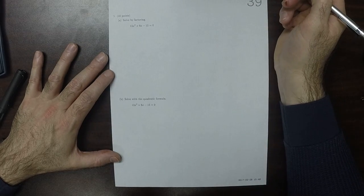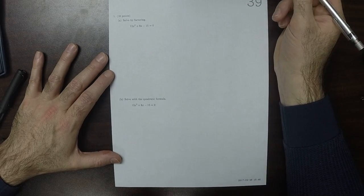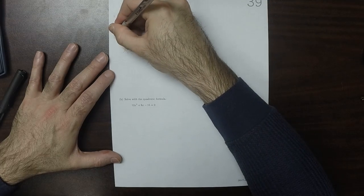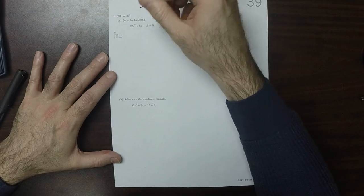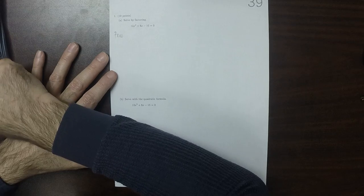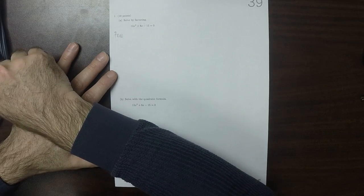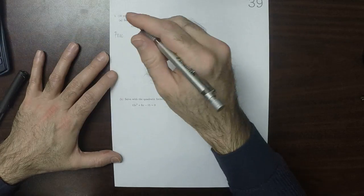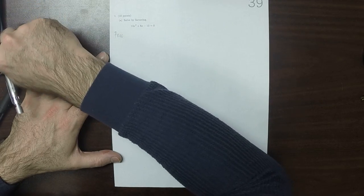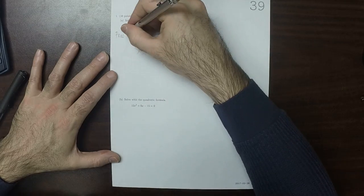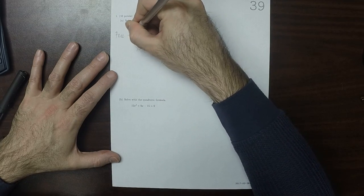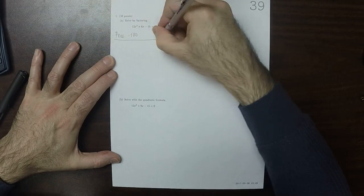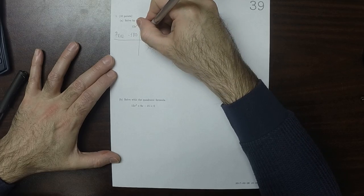The first method says solve it by factoring. So we want the product to be 12 times negative 15. We want it to be negative 180, and we want the sum to be 8.